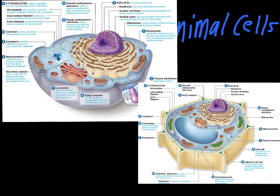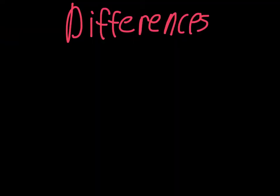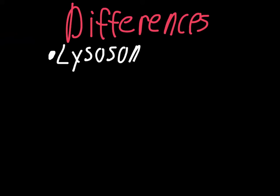Those are the main similarities and differences visually. Now let's go through a list so you have them clearly. Starting with important differences: lysosomes are found in animal cells, though they would be found in some plant cells as well, but it's rare.